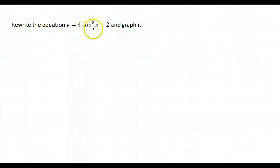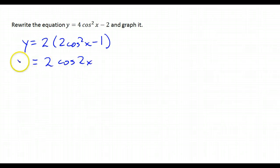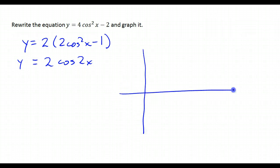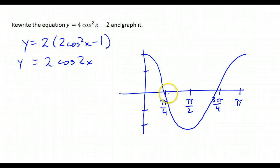In this example, we're asked to rewrite this equation and graph it. We don't really know much about graphing squared trig functions, so let's factor out a 2. This gives us one of our new formulas — this is the cosine of 2x — so we get 2 cosine 2x. The 2 in front of the x reduces the period to pi, and the 2 in front of the cosine makes the amplitude 2.